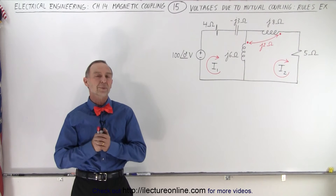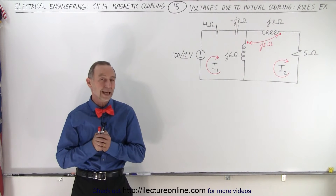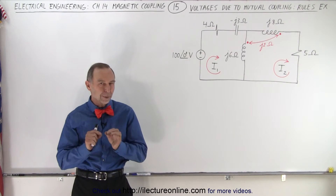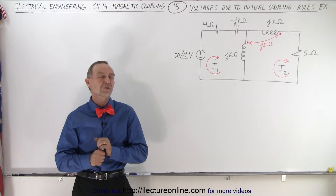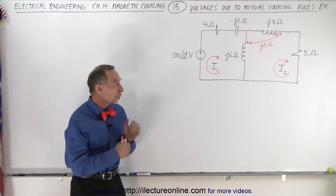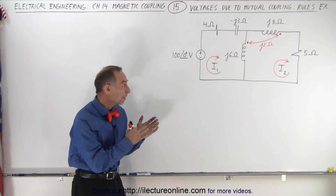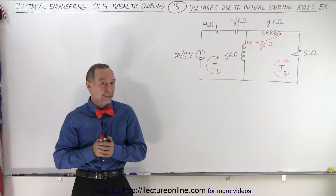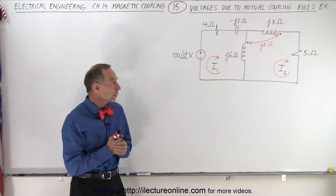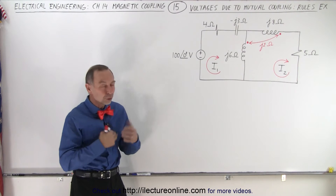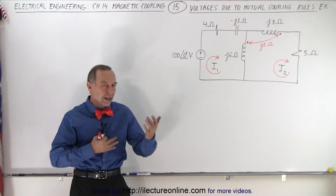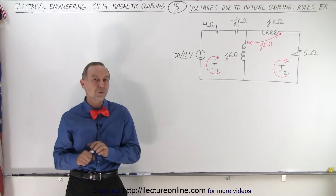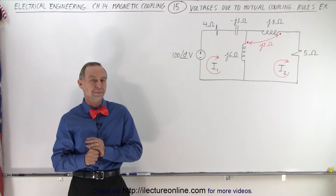Welcome to Electron Line. Now let's try a problem that's a little bit more difficult. Notice that we have two inductors. They're coupled — there's mutual coupling between them. There are two loops, but how many times do we need to deal with mutual coupling here?